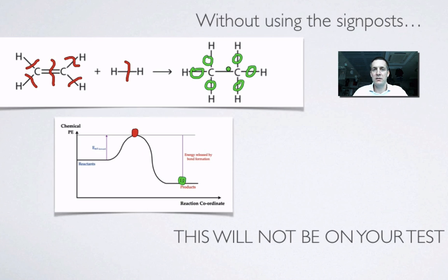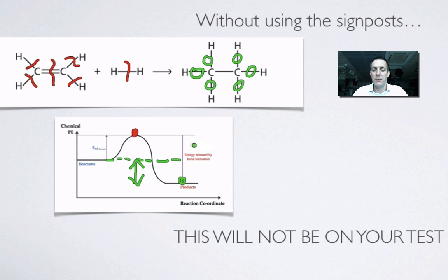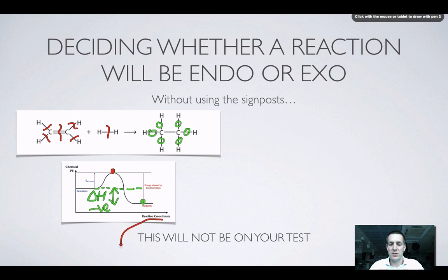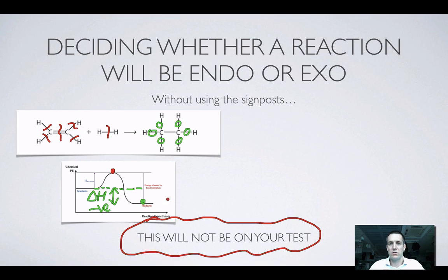Now, if someone told me — as data books do, but which we don't have to do on the WJEC course — how much energy was in each of these bonds, then I could figure out the relative sizes of the uphill and downhill parts. Based on that, I could decide whether the enthalpy change was going to be negative or positive. Because if more energy is released by making the new bonds than was absorbed when we broke the old ones, then overall the enthalpy change will be negative and therefore it will be exothermic. However, it's worth emphasising: you don't have to be able to do this on the WJEC course. You don't have to decide whether there's more energy in the bonds here or there. You just have to be able to look at those signposts — can you spot whether it's a bonding reaction, can you see whether bonds were broken or made?